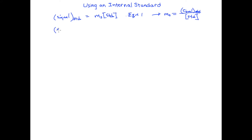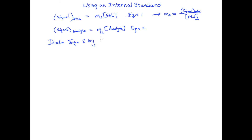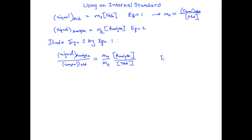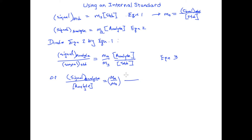We can write a similar equation for the analyte and its response factor. If we divide equation 2 by equation 1, we get this ratio: the ratio of the signals is equal to the ratio of the response factors times the ratio of the concentrations. Let's call that equation 3. Alternatively, we can rearrange that to show the concentration of the analyte is equal to the ratio of the response factors times the signal for the standard divided by the standard concentration.